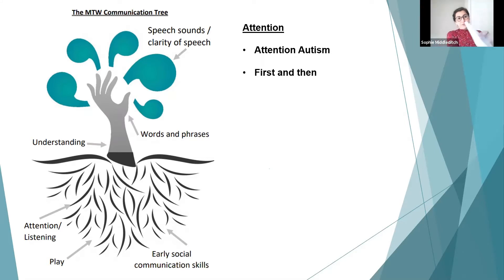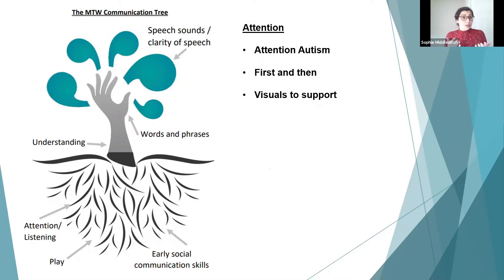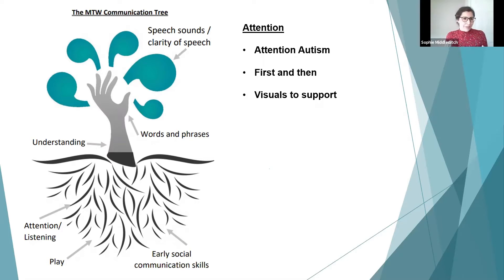Next, we have visual timetables to support comprehension. This is similar to First and Then but longer. I'd start with First and Then, and if the child can access that, move to First, Next, and Then — three things — keeping that final item something motivating. You want to try and keep that 'then' thing fun for them.